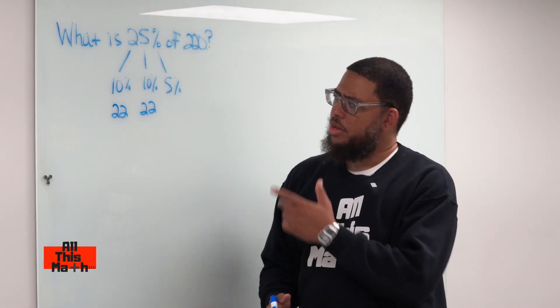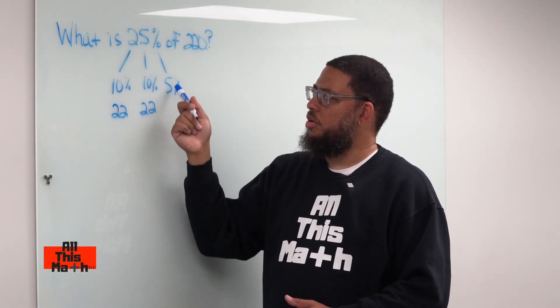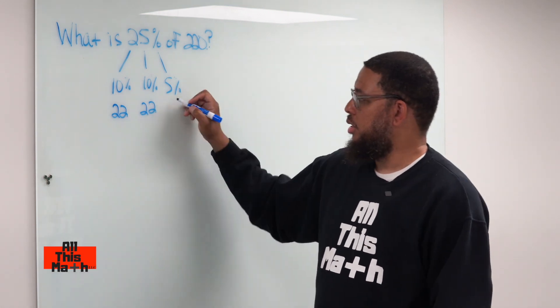Well, 5 is half of 10. So that means that if 10% is 22, 5% should be half of 22. And half of 22 is just 11.